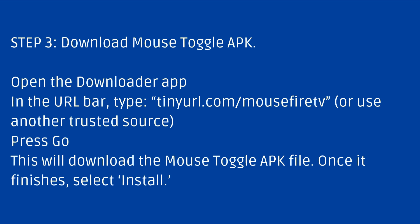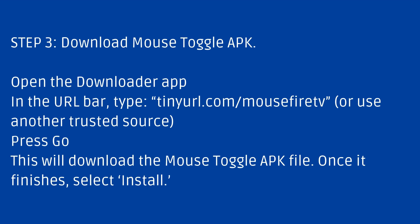Step 3: Download the Mouse Toggle APK. Open the Downloader app, enter the URL in the URL bar, and press Go. This will download the Mouse Toggle APK file.